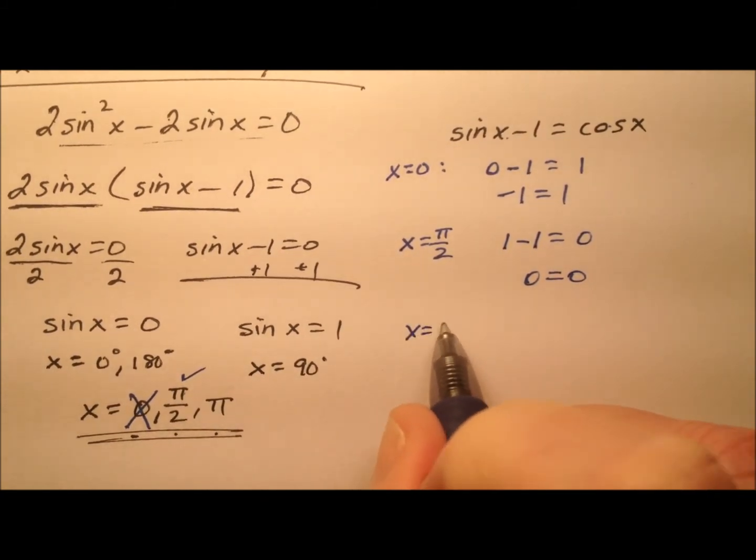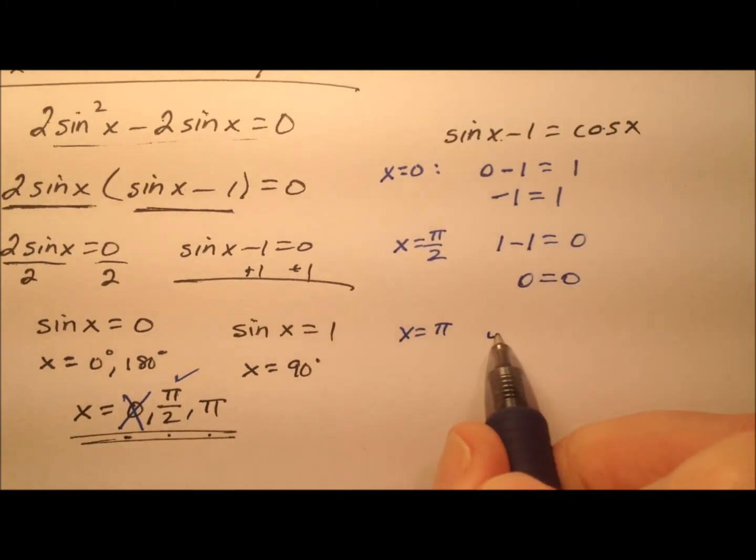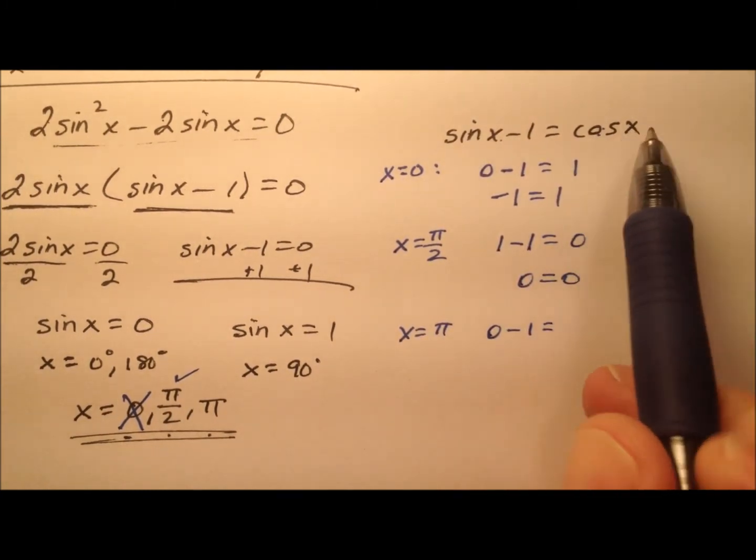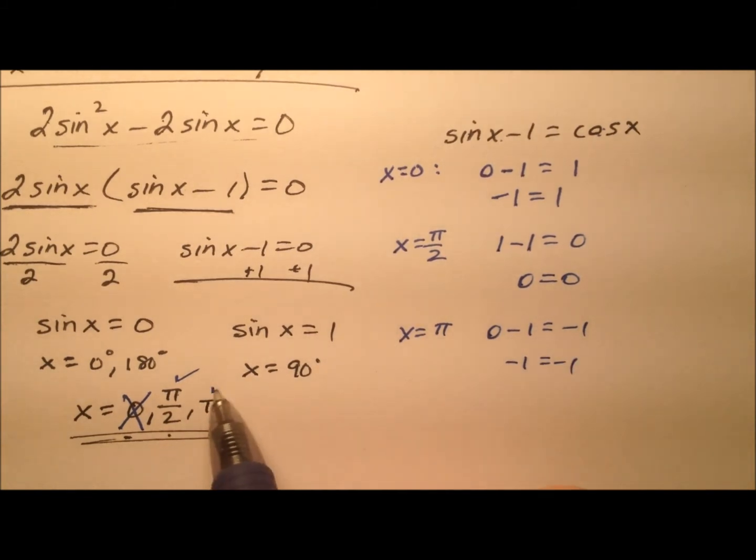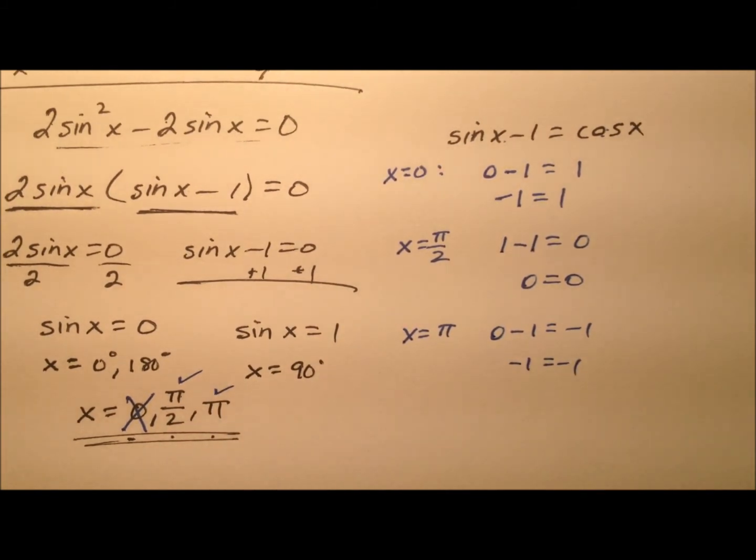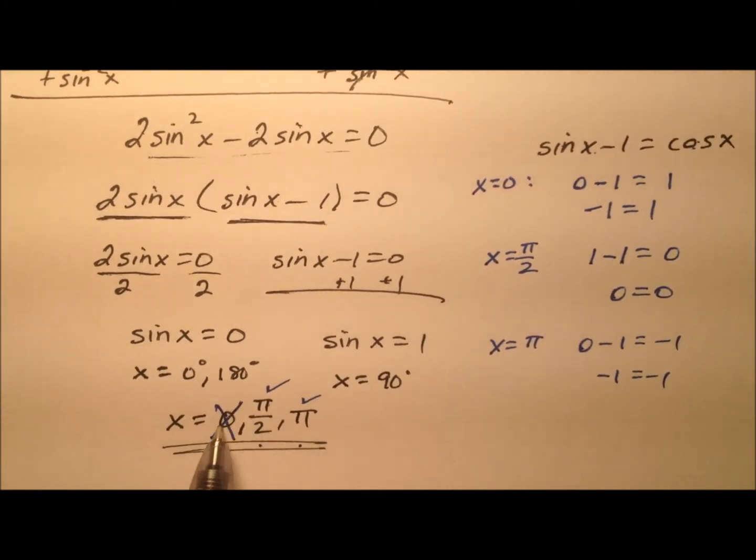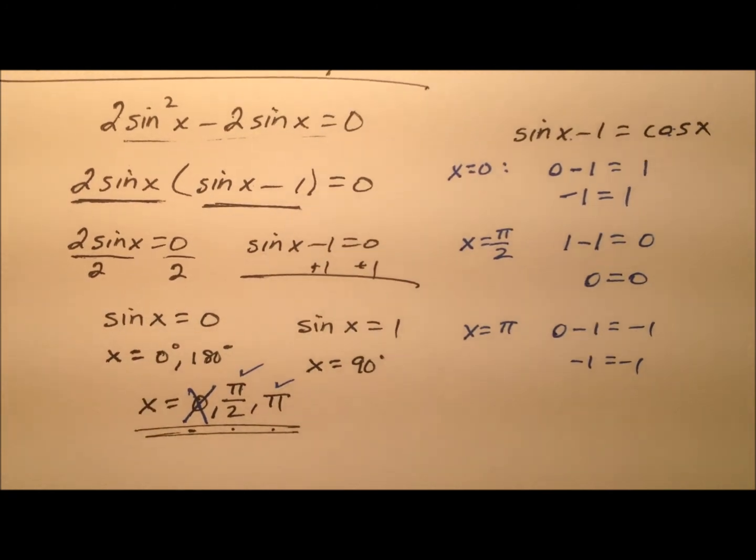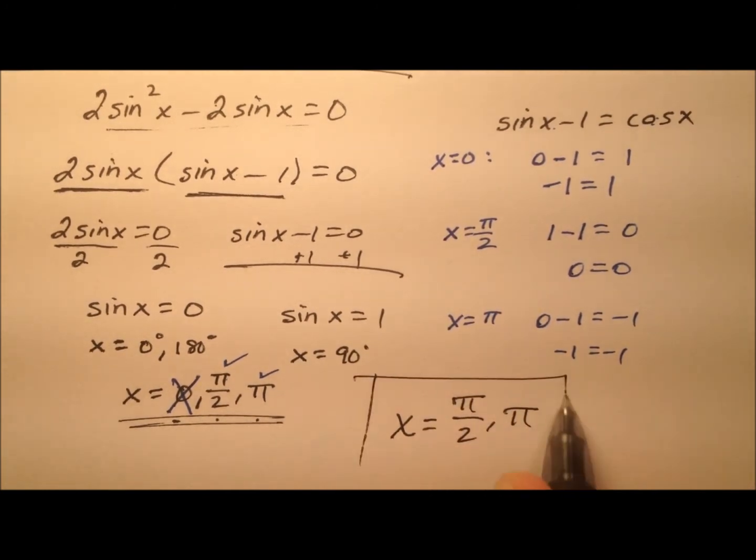And finally, let's try x equals π. So the sine of π is going to be 0 minus 1, and the cosine of π is negative 1. So negative 1 equals negative 1. That works as well. So it's a good thing we plugged them back in because we saw that actually this x equals 0, despite getting it as one of our possible solutions, it actually was not a solution. So we have now for our final solutions, x equals π over 2 and π.